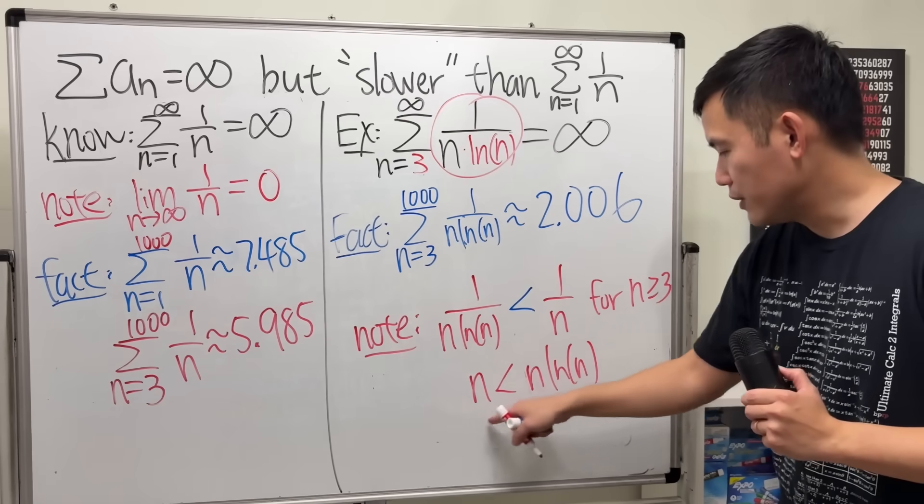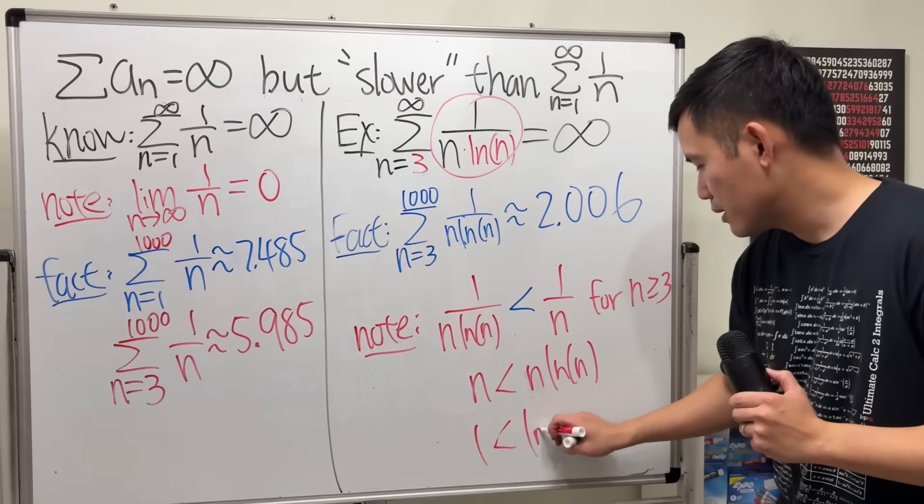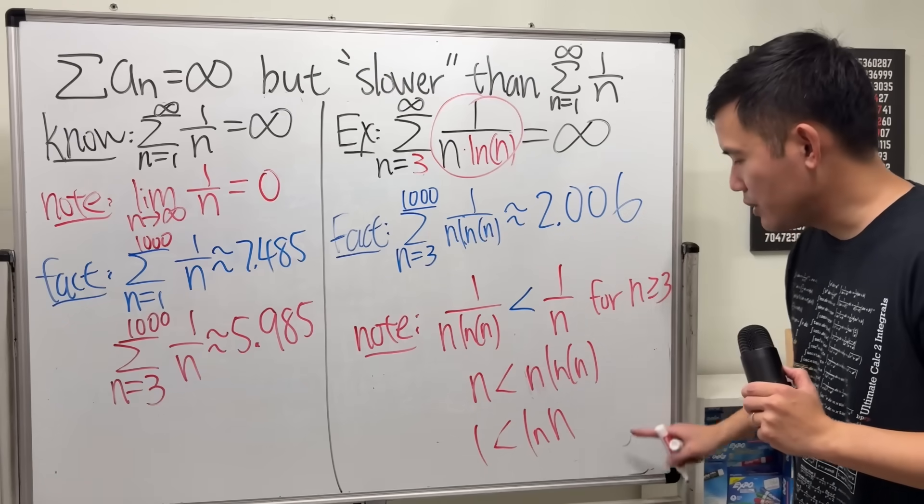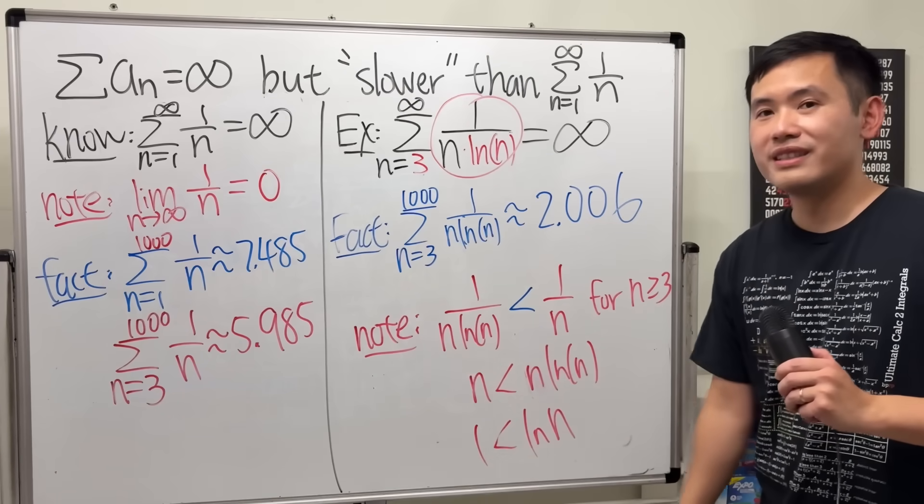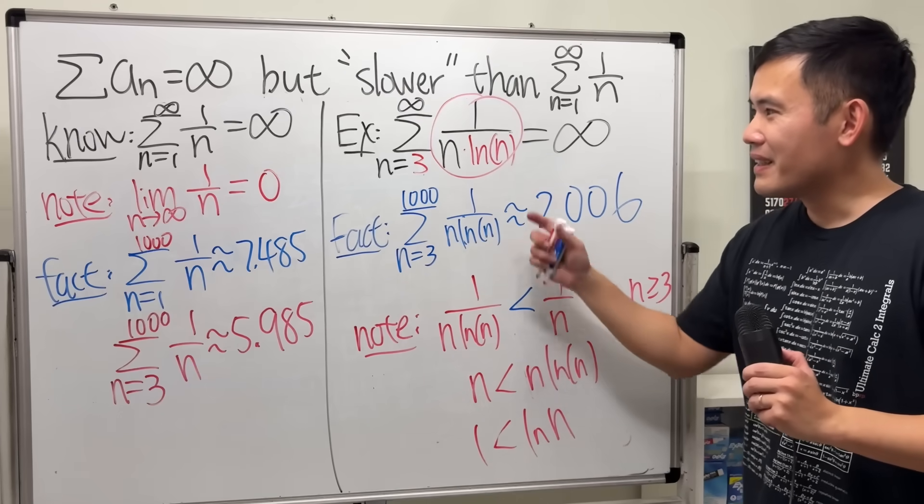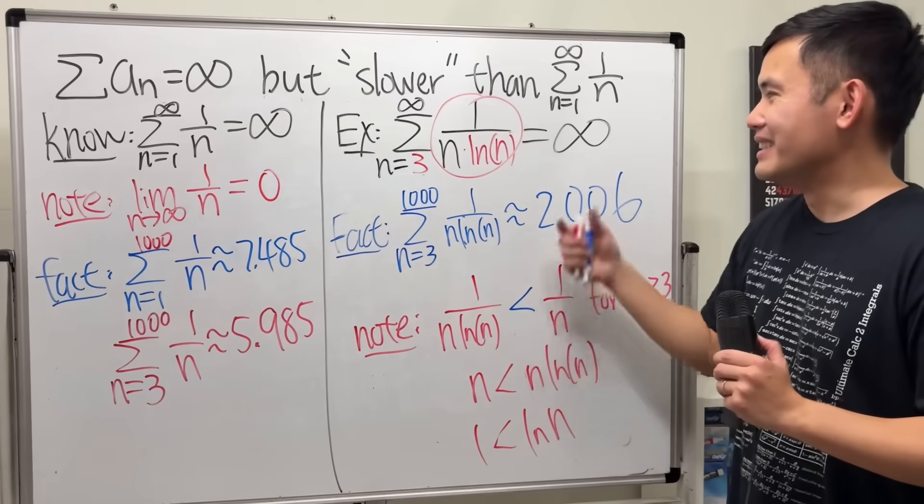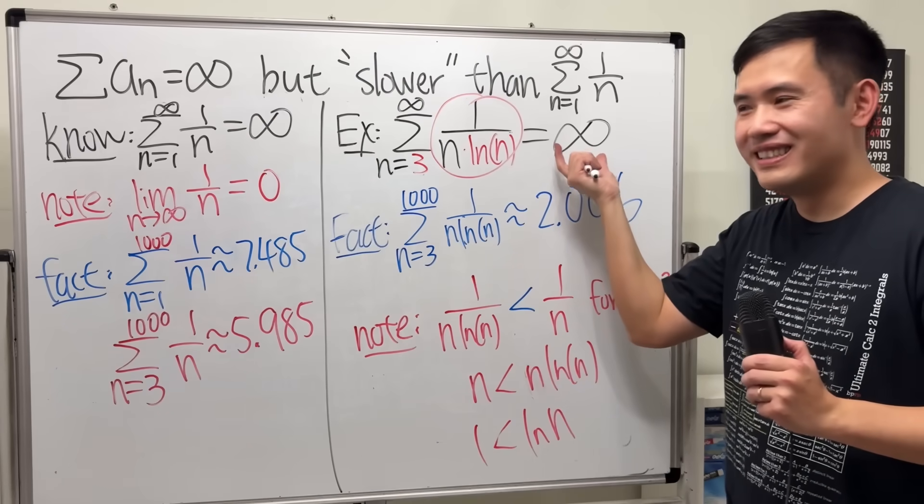If you cross multiply you can see that n is less than ln n times n, right, and if you divide both sides by n, as n is bigger than or equal to 3 this is true. Yeah, so all the terms are smaller than the terms here and it goes to infinity. Very cool.